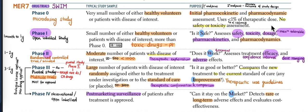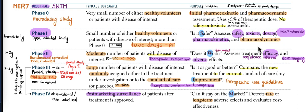In Phase 1, you can consider healthy volunteers as well as patients with the disease of interest. However, if the drug is very toxic, you use patients only — you can't subject healthy volunteers to a toxic drug. This phase assesses safety, toxicity, dosage, maximum tolerable dose, pharmacokinetics, and pharmacodynamics. Maximum tolerable dose is an important term that has appeared in exam questions.